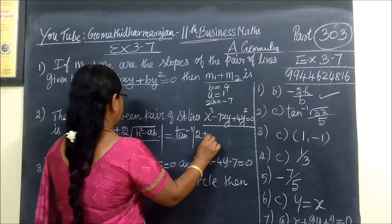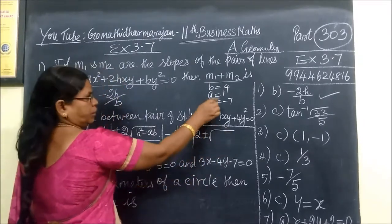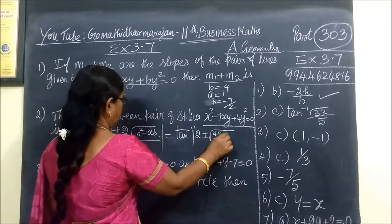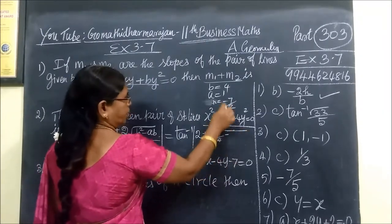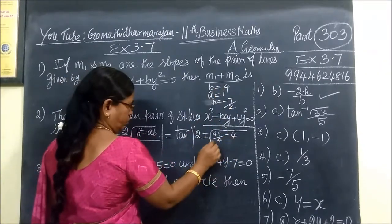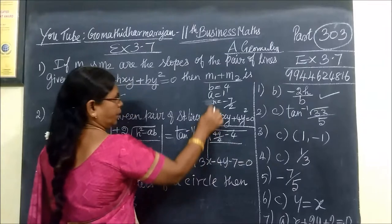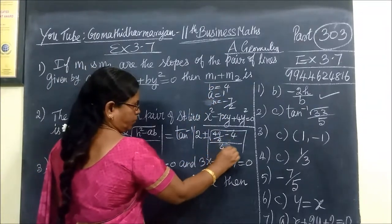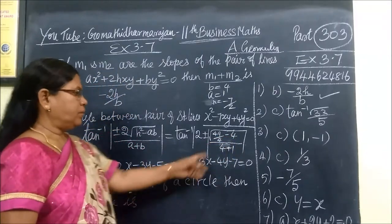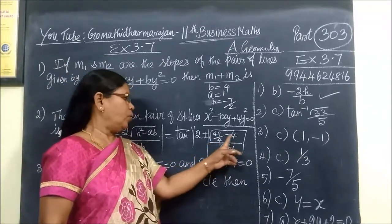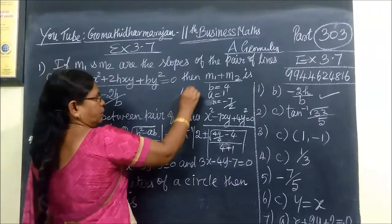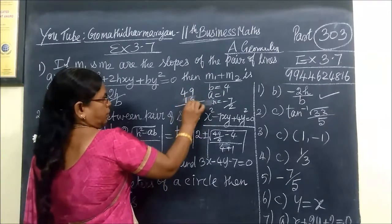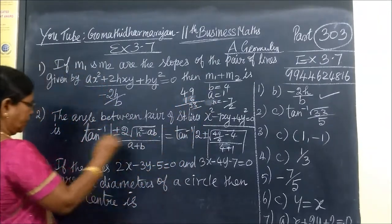It equals plus or minus root of H squared, which is -7/2 squared = 49/4, minus AB (1×4 = 4), divided by A+B (1+4 = 5). Then 49 minus 16 is 33.